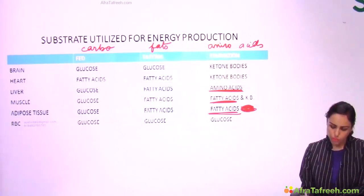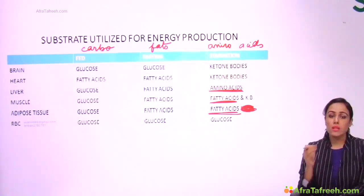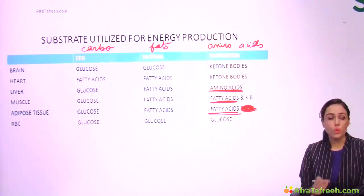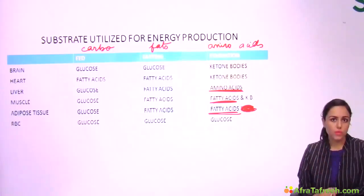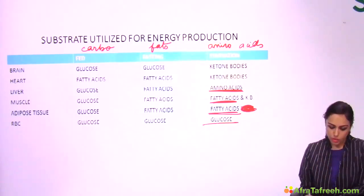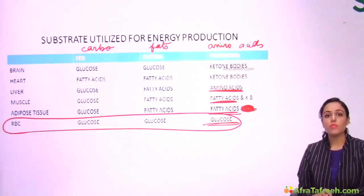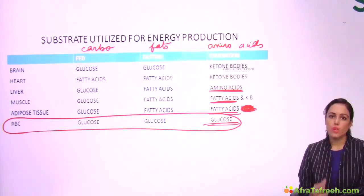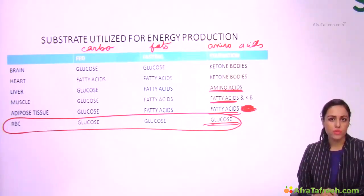For adipose tissue in starvation, they use fatty acids — they have fats, so they use fatty acids. Some books write that adipose tissue uses ketone bodies, but I'm crossing that out because it is wrong — adipose tissue does not use ketone bodies. And for RBCs, they are always on glucose. Note this: RBCs are always on glucose; they cannot use any other fuel because there is no mitochondria in RBCs.